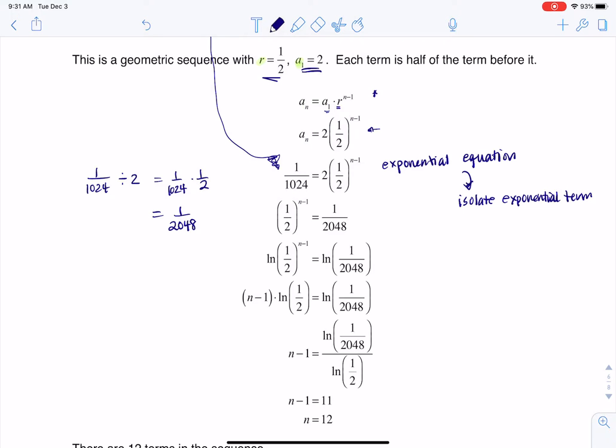Now that I have my exponential term isolated, I need to log both sides. And you can either common log both sides or you can natural log both sides. And I just chose to natural log both sides. It doesn't matter which one you do. They're both going to work. But once you log both sides, we have that power property from logarithms that allows me to drop that exponent down.